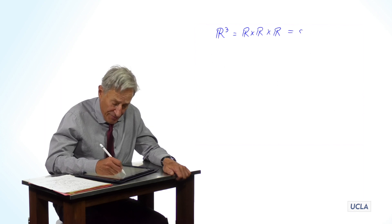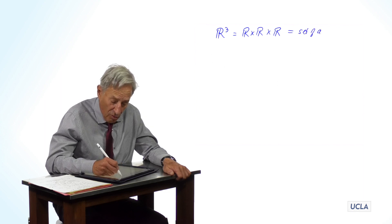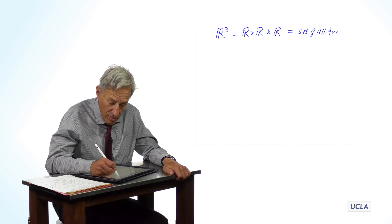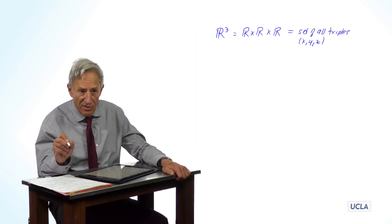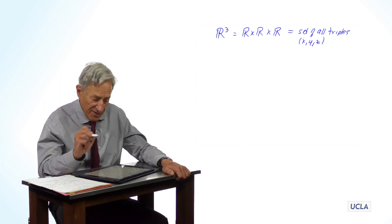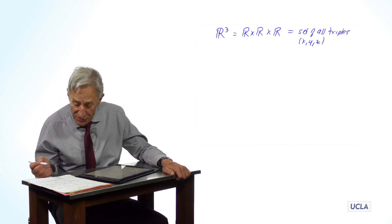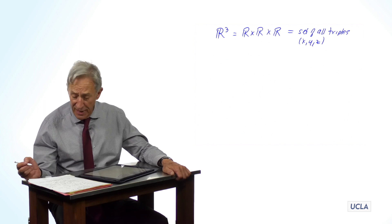and R3 is of course R cross R cross R, which is the set of all triples x, y, z, where x is in R, and y is in R, and z is in R. And this is called the Cartesian product of three copies of R.